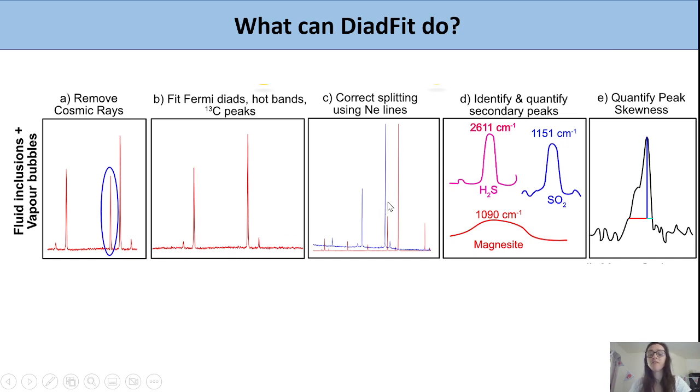Once you've removed that, you can fit various background positions and peak types to quantify the splitting between these dyads. There are different workflows. If you've measured the spectral emission of neon throughout your run, you can automatically loop through and fit all those neon lines.